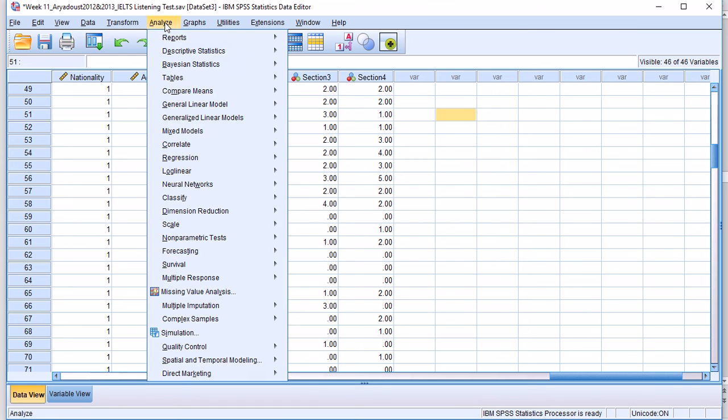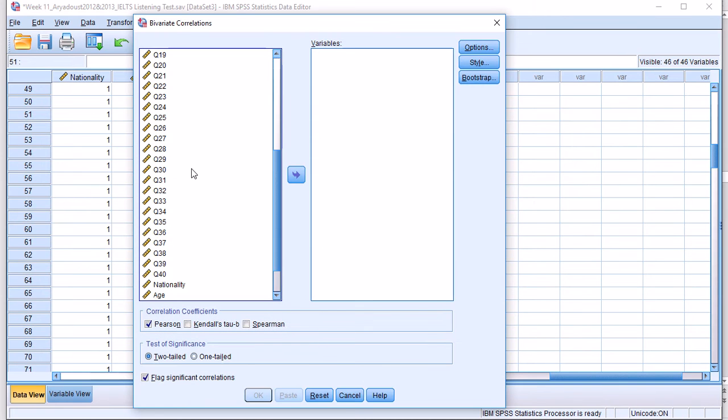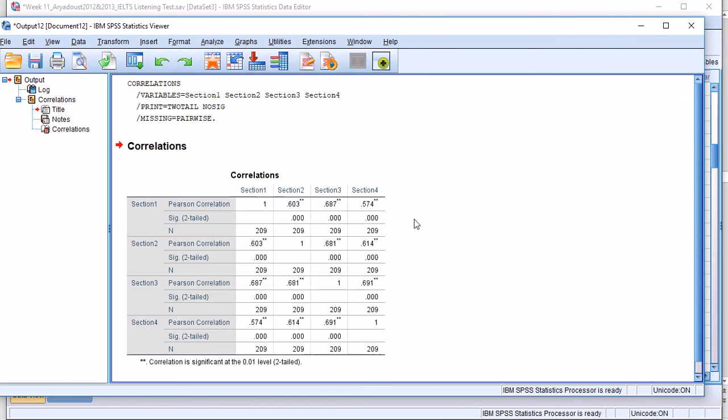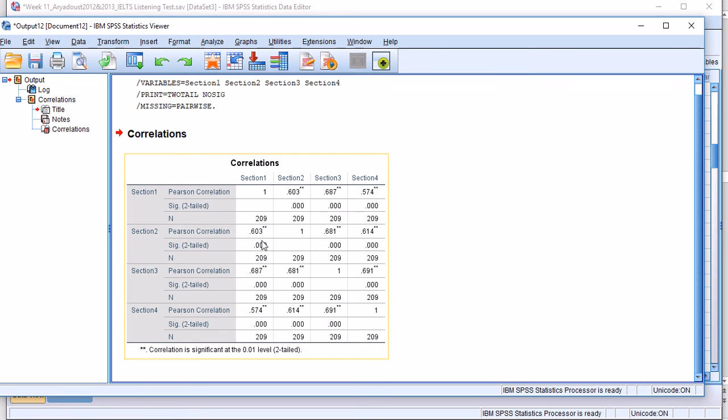This is actually an IELTS listening test which has four sections, and I've added up items in section one, then section two, three, and four to create four composite scores. I want to figure out if the correlation between these composite scores is high or not. I go to Analyze, Correlate, Bivariate Correlations, and I move section one all the way to section four to populate the variables.